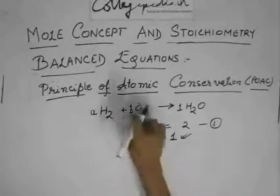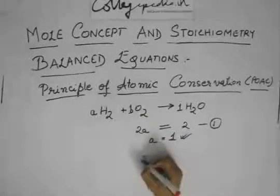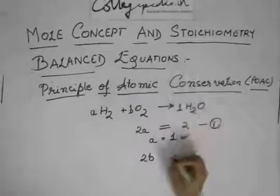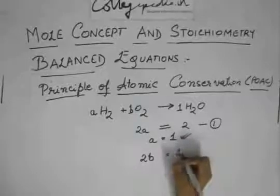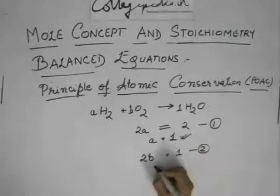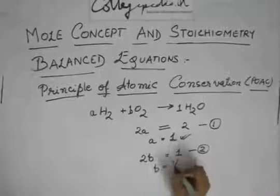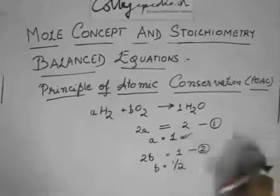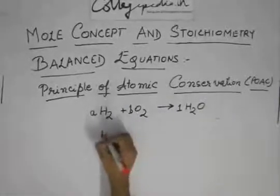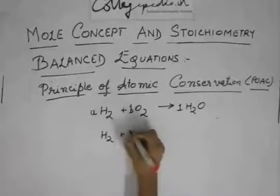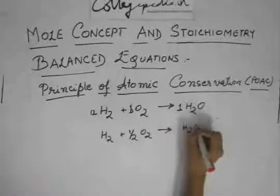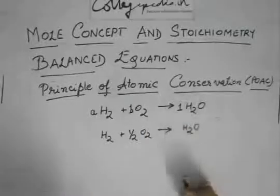Now, coming to oxygen. On the left-hand side, you have 2B atoms of oxygen. And on the right-hand side, you have 1 atom of oxygen. So your equation 2, this B would come out to be half. So now you can write, since you have got A as 1 and B as half, you can write H2 plus half O2 gives H2O.